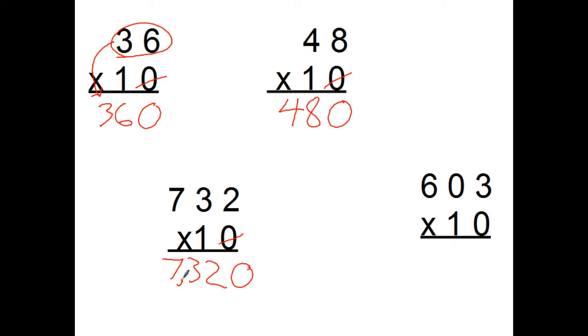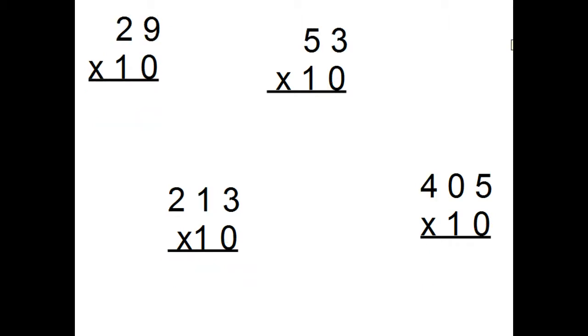603 times 10, put down my 603, add the zero to the end, count over 1, 2, 3 spots for my comma. 6030. Now would be a good time for you to stop the video,